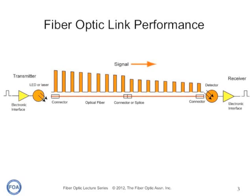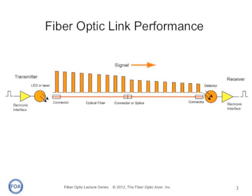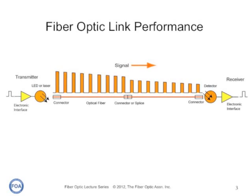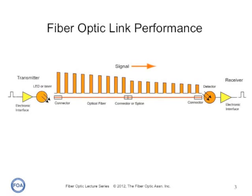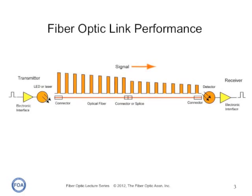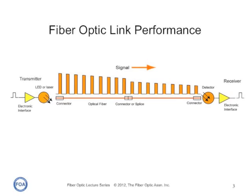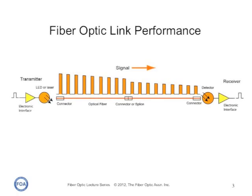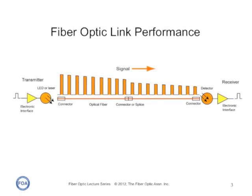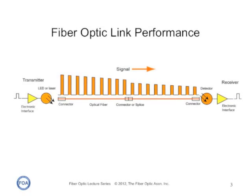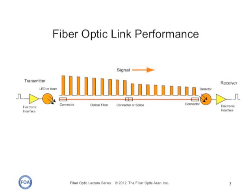A fiber optic link uses an LED or laser transmitter to convert an electrical signal to optical and couple that into an optical fiber. The optical fiber transmits the signal to the receiver. Along the way, the optical fiber attenuates the signal, and any connector or splice in the link will add loss. So the power at the receiver is determined by how much power you put in with the transmitter and how much is lost in the cable plant.